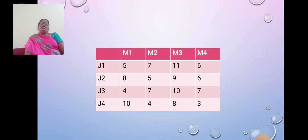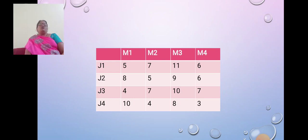We are going to use the Hungarian assignment method to solve the assignment problem. The first column and first row: M1 and J1 holds 5, M2 and J1 is 7, M3 and J1 is 11, M4 and J1 is 6. The rows are J1, J2, J3, J4 and the columns are M1, M2, M3, M4. Now we are going to solve the problem.